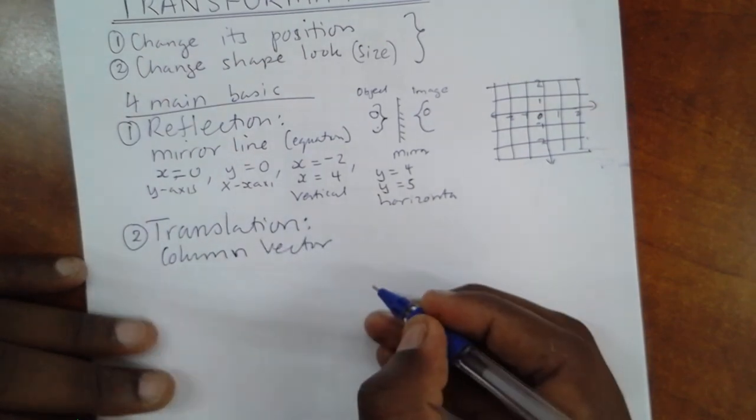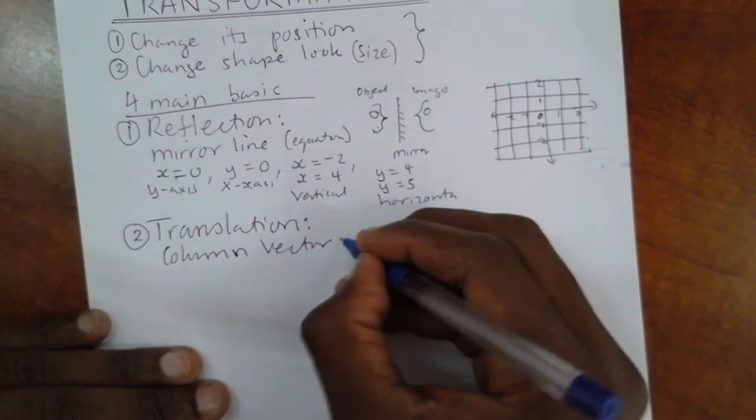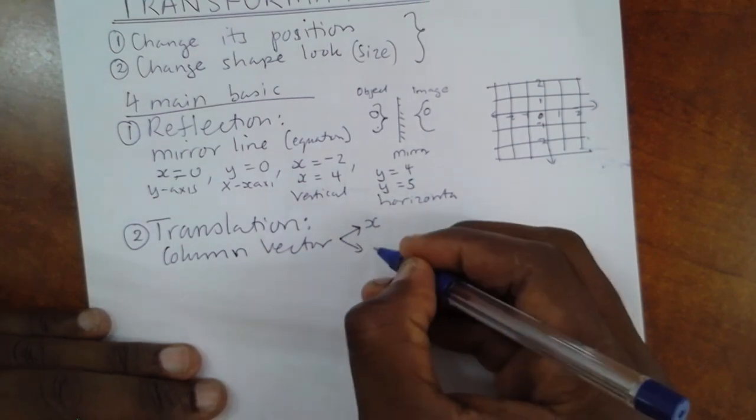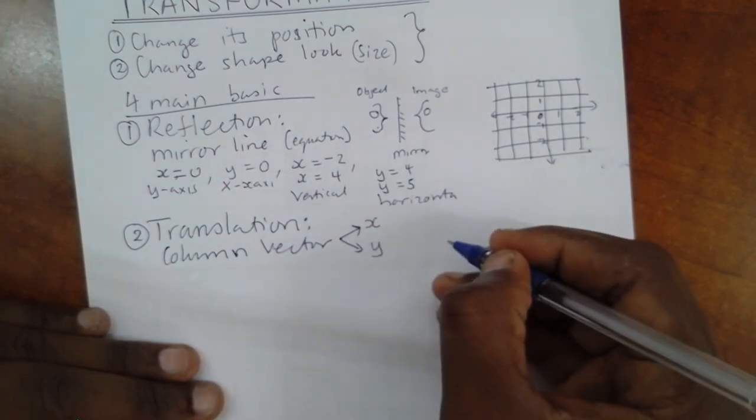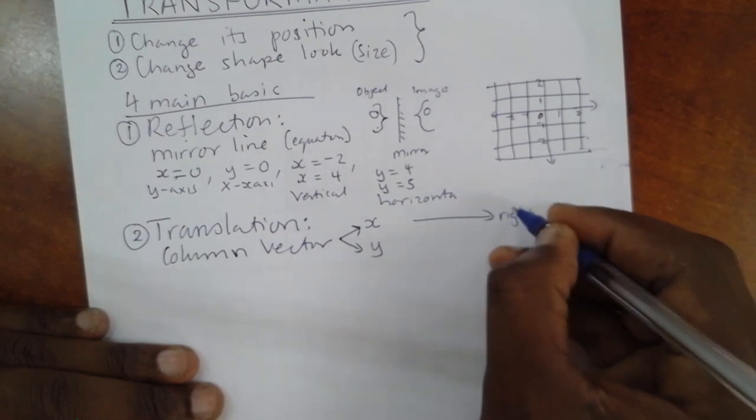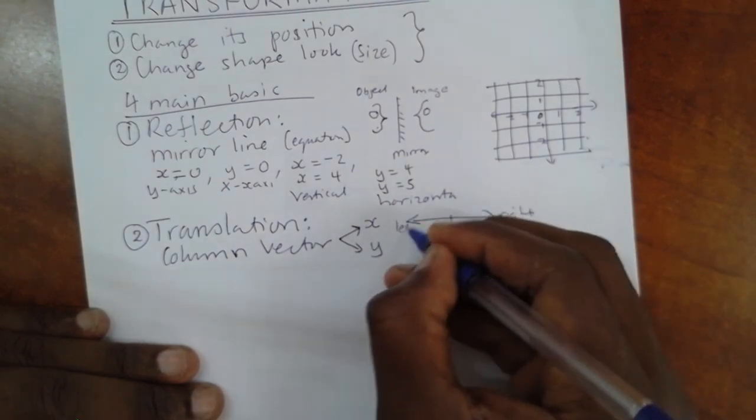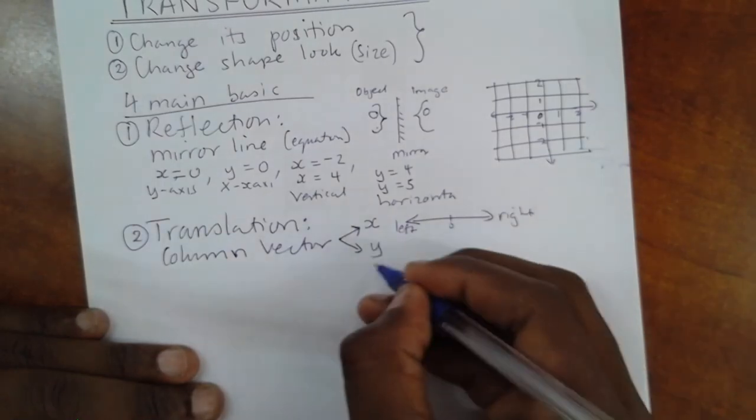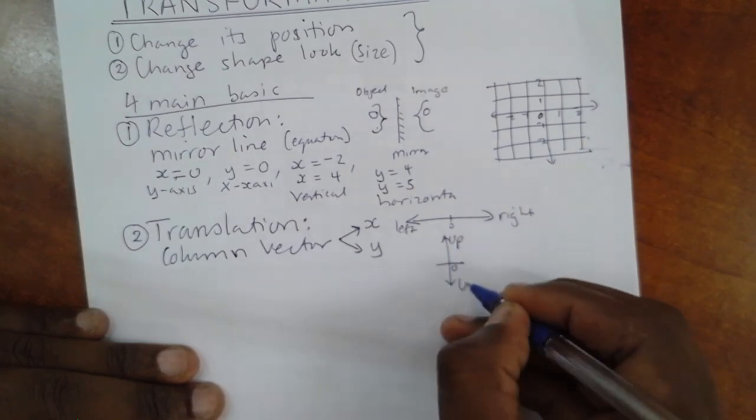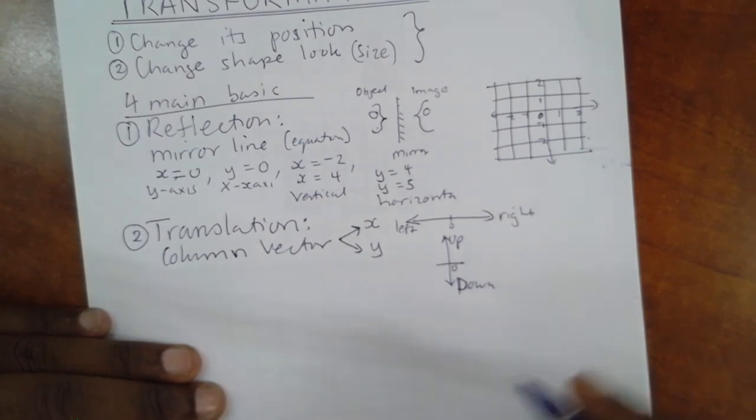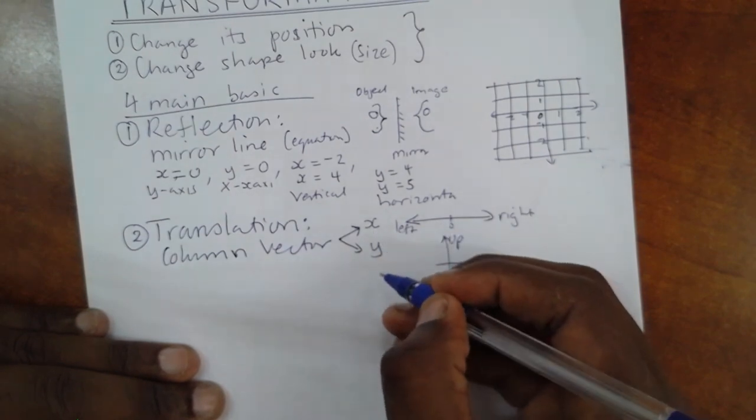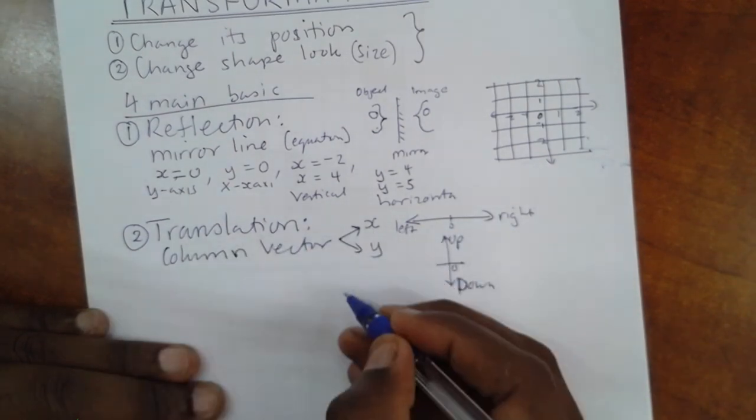Column vector simply means the movement on the x-axis together with the movement on the y-axis. In other words, x-axis movement can be going right from zero or going left from zero. And y-axis movement can be from zero going up or going down. So, when we carry on this kind of movement, starting with the x movement, then y movement, that's what we represent as column vectors.